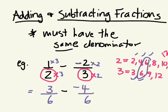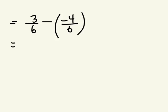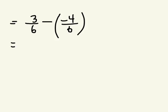I can put this in brackets, just so you remember it's 3 over 6 take away negative 4 over 6. When you're adding or subtracting fractions, you don't add or subtract the denominators — you add and subtract only the numerators. So I'm actually just doing 3 take away negative 4, and whatever I get will be over 6.